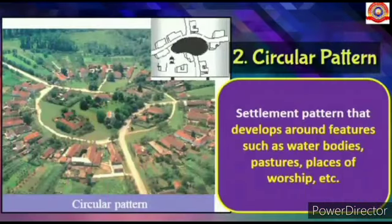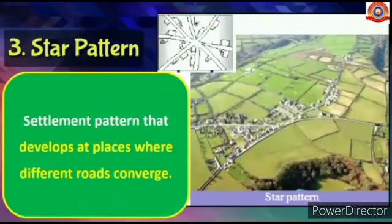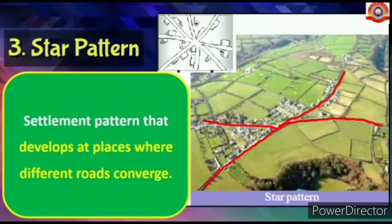Second, circular pattern — a settlement pattern that develops around features such as water bodies, pastures, and places of worship. Third, star pattern — a settlement pattern that develops at places where different roads converge.